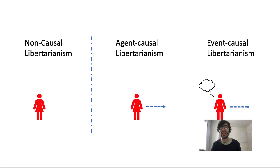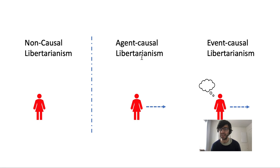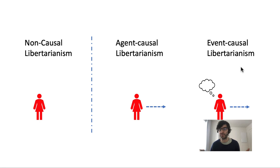Libertarianism comes in three basic varieties. Agent-causal libertarians and event-causal libertarians agree that what makes an action free has to do with its causal history, but they disagree about what this history needs to look like. Agent-causal libertarians deny agency reductionism and hold that free will requires basic causation by an irreducible agent — the kind of theory we've seen when we talked about Chisholm. Event-causal libertarians, on the other hand, accept agency reductionism and hold that a free action is caused purely by earlier events, involving the same kind of ordinary event causation found everywhere else in the world, with no special involvement of any irreducible notion of an agent.